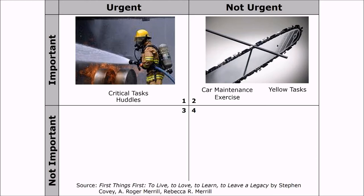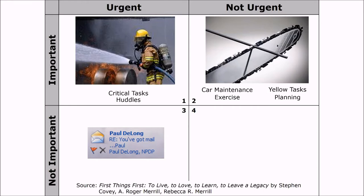Planning also falls into quadrant two — there's little urgency, but it helps us ensure we're doing the right things at the right time. Everything in quadrant two requires discipline. Quadrant three is where we sometimes manufacture urgency inappropriately — like responding to an email pop-up notification. The urgency from a pop-up isn't real; it's an opportunity to turn it off and focus during the mornings on project tasks, since those notifications create switching costs and distractions.